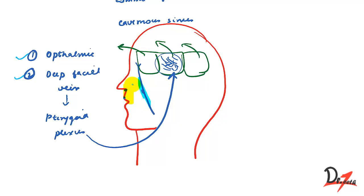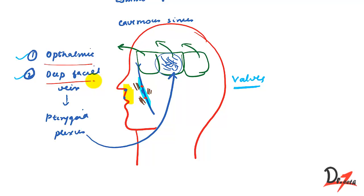Also, the facial vein does not contain any valves, and it rests directly on the muscles of facial expression. When these muscles contract, any infection or infective emboli present in this vein can spread. Via either of these two routes, the infection can reach the cavernous sinus and cause thrombosis, which can be fatal. That is why this area is called the dangerous area of the face.